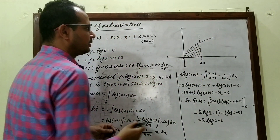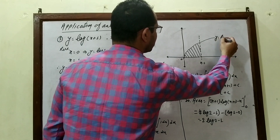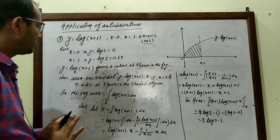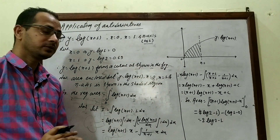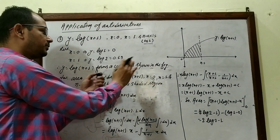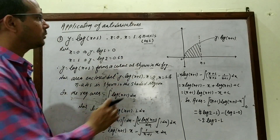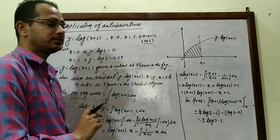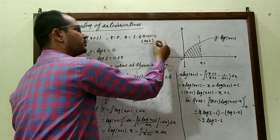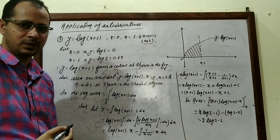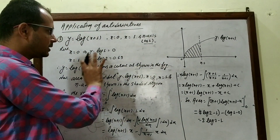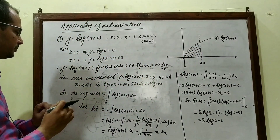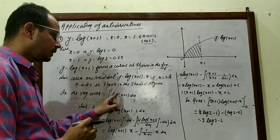The curve represented by y = log(x + 1) is now clear. The area enclosed between x = 0, x = 1, the x-axis, and the given curve is shown in the shaded region. This question appeared for 4 marks in the 2062 board examination — it is an important question. The required area is the integral of log(x + 1) dx from 0 to 1.